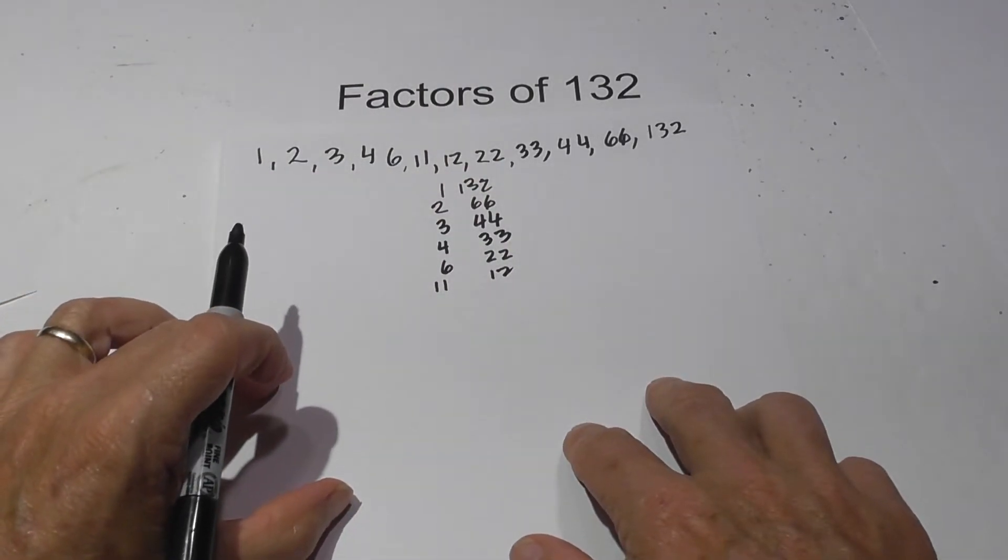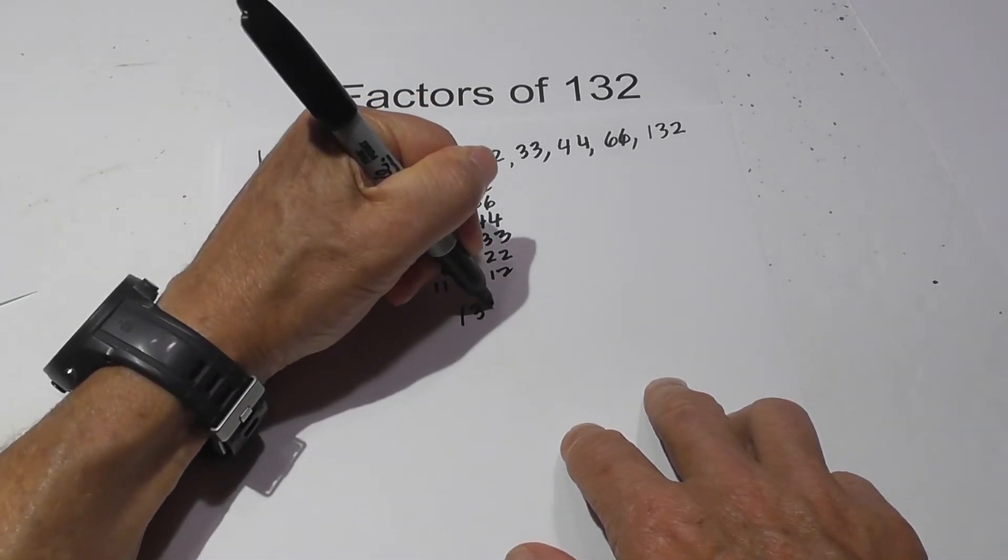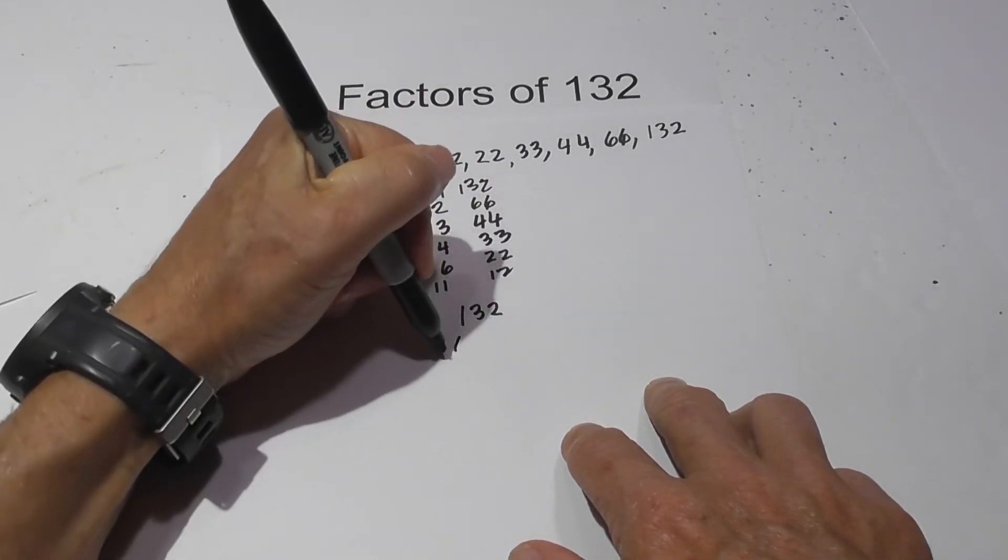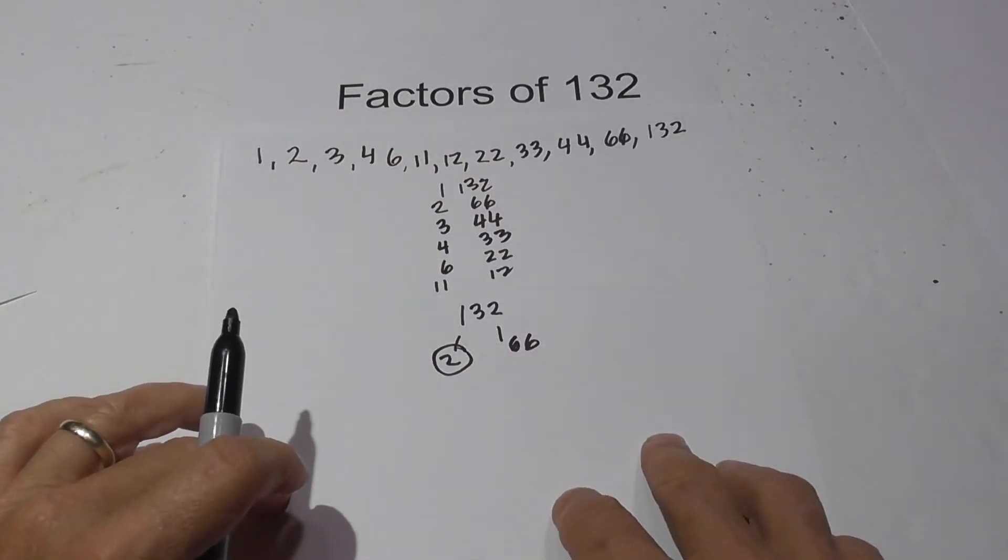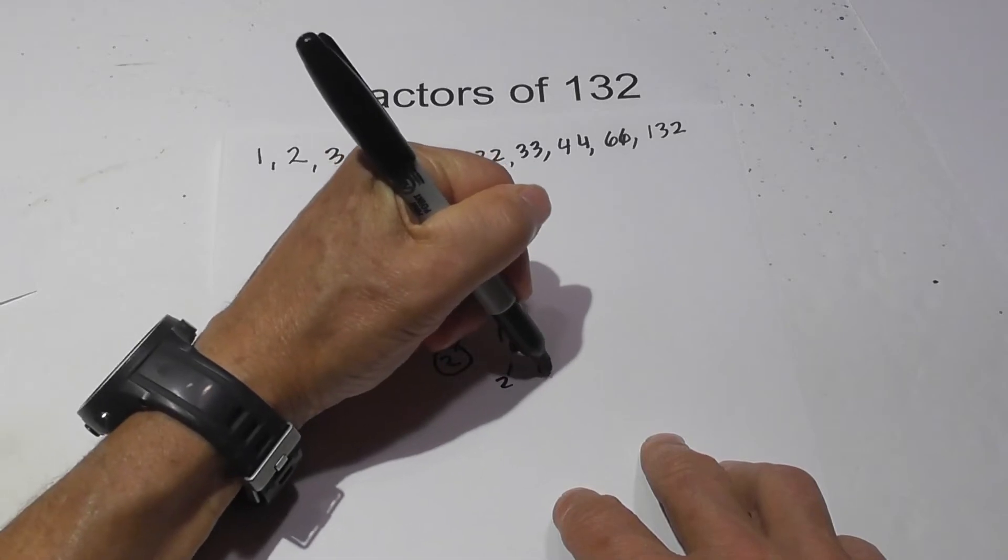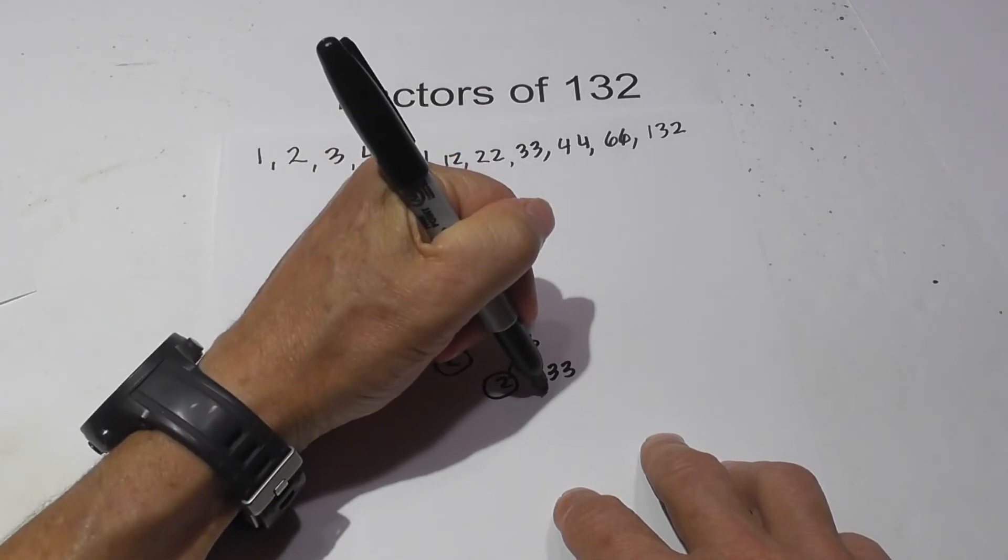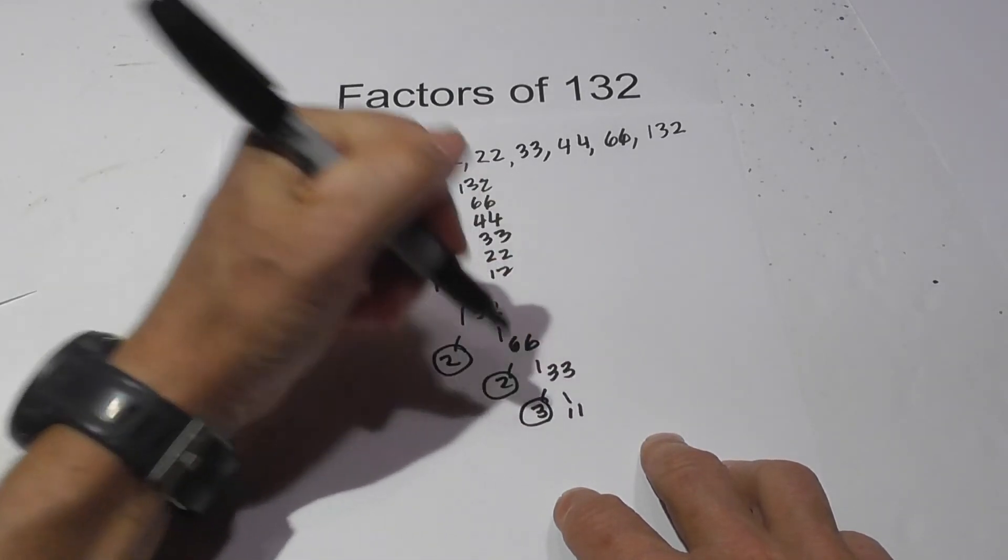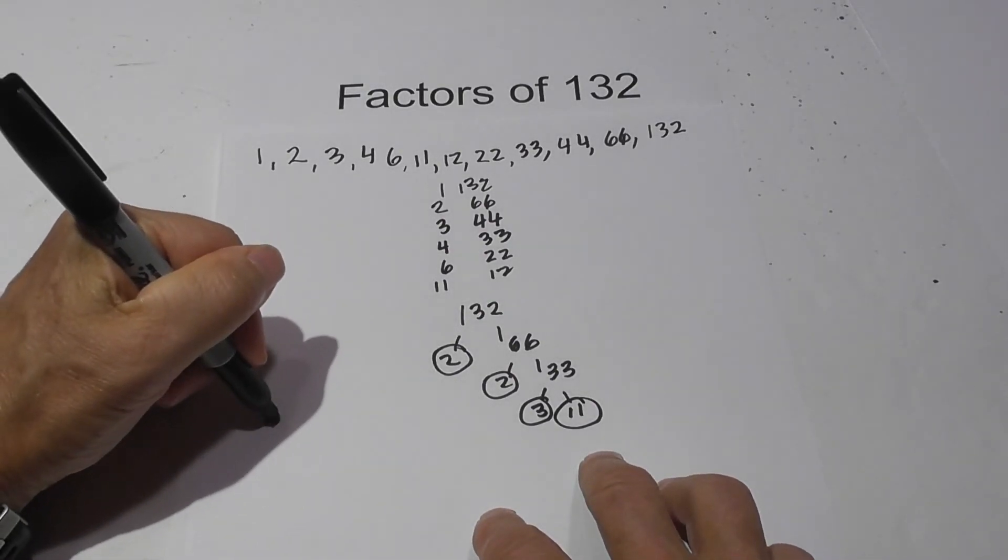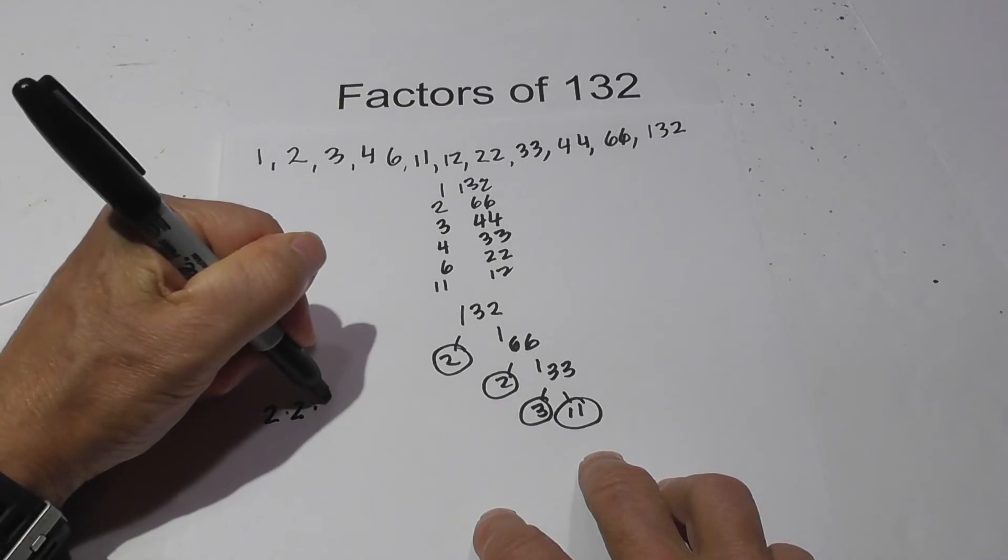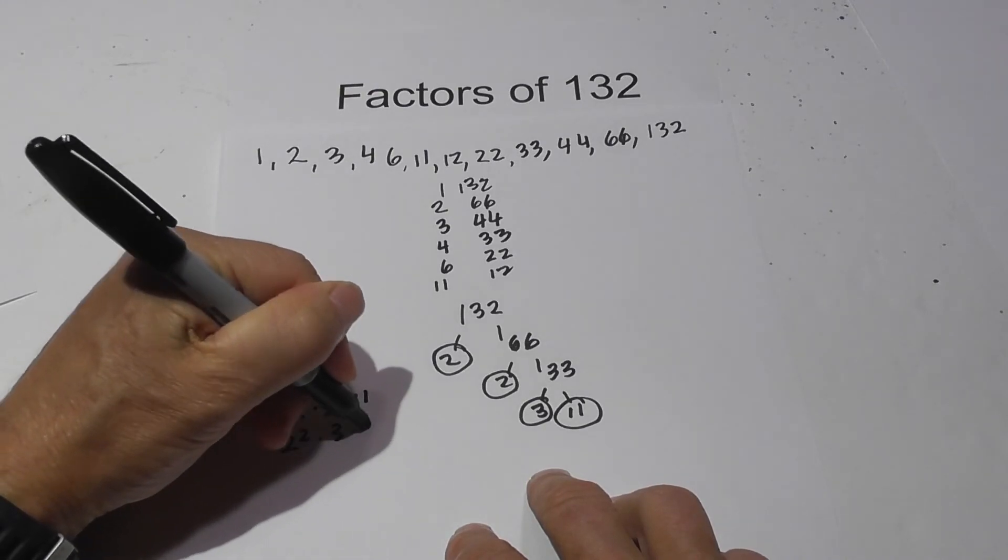Next, let's find the prime numbers of this. You would think it would have a lot of prime numbers, but really it doesn't have that many. Let's begin with 2 times 66. Circle the 2 because it is prime. And now 3 times 11, circle the 3 and the 11 because they are both prime. So the prime numbers are 2 times 2 times 3 times 11, and you can write this 2 squared times 3 times 11.